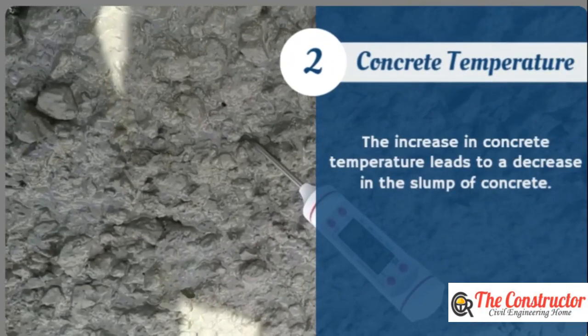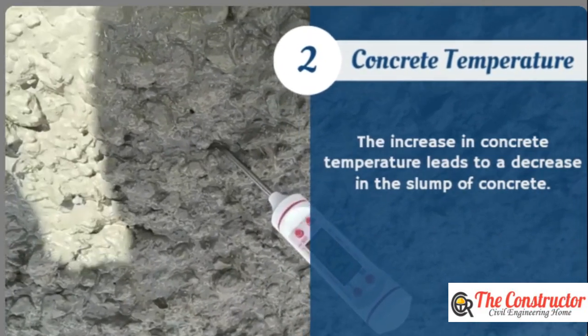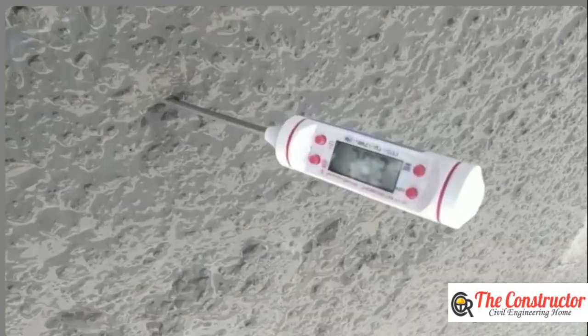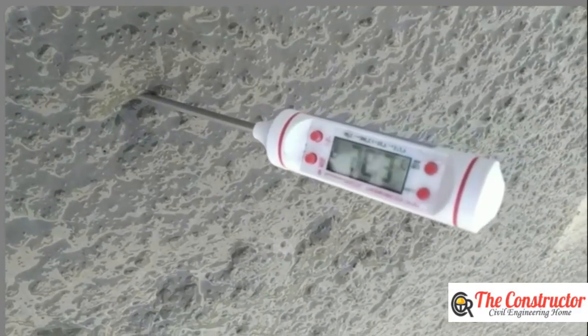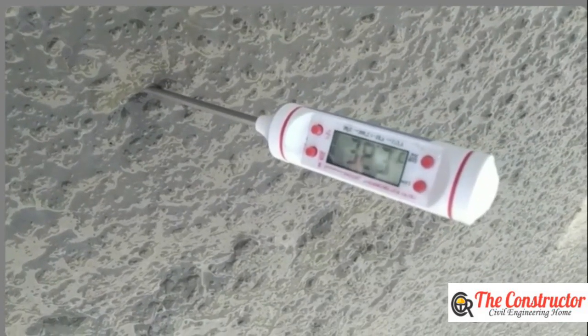The rise of concrete temperature by 12 degrees Celsius requires 3.78 liters of extra water to maintain the same slump value that concrete could have at a lower temperature.